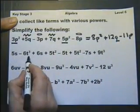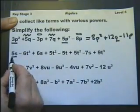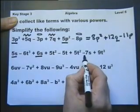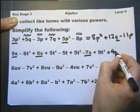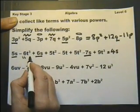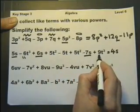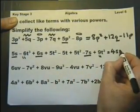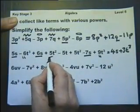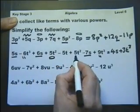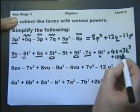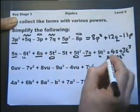Now it doesn't matter what goes first. So we might as well start with the s's. There's 5, 11, take away 7, so there's plus 4s's. There's minus 6t cubed, plus 9t cubed, so that'll give me plus 3t cubed. There's plus 5t squared, another 5t squared there, so that's plus 10t squared. And a minus 5t.